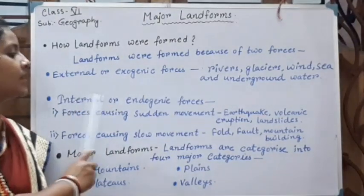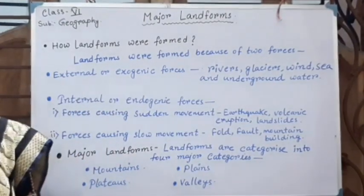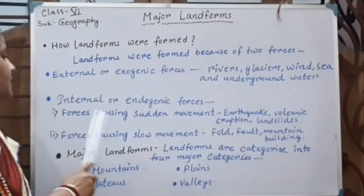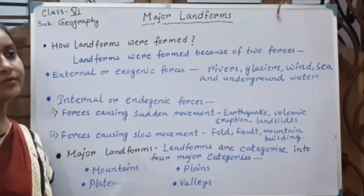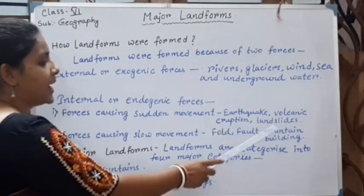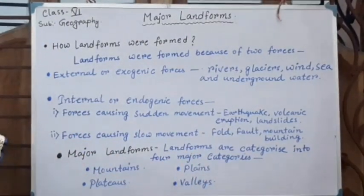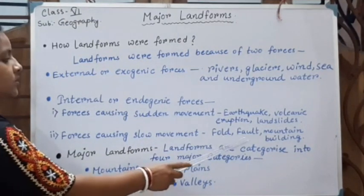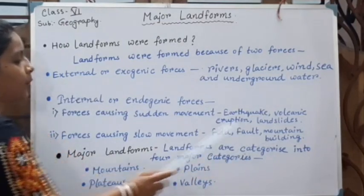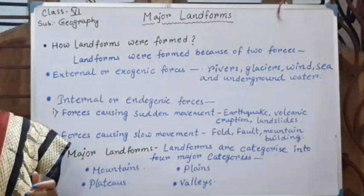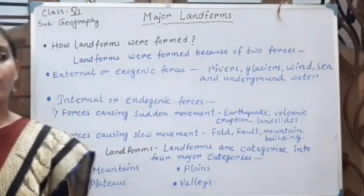Internal forces can be of two types. One is forces causing sudden movement — these are earthquakes, volcanic eruptions, and landslides. Number two is forces causing slow movement — these are folding, faulting, and mountain building. These are the causes of how landforms were formed.